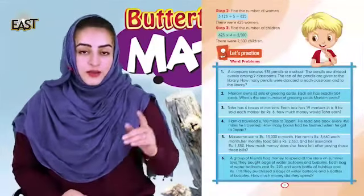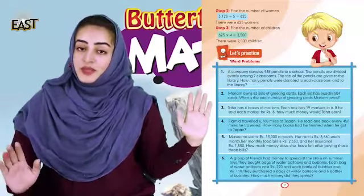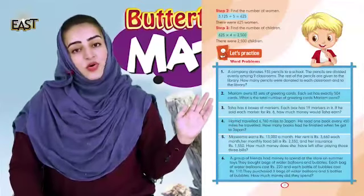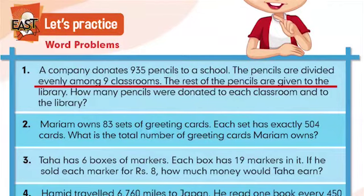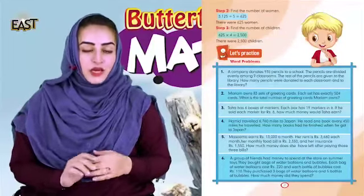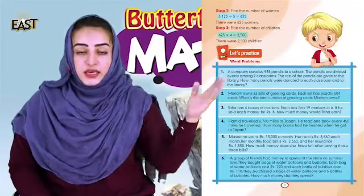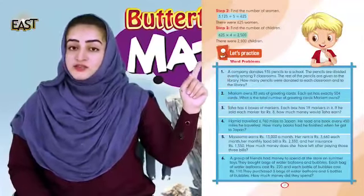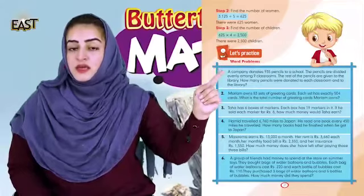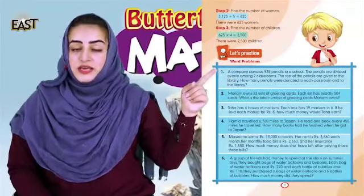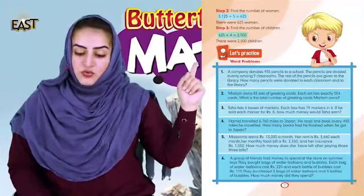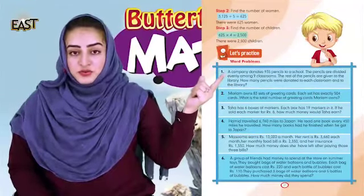So let's start — page 21, question 1. Let's read together; I will help you with all the questions, so don't worry. A company donates 935 pencils to a school. The pencils are divided evenly among 9 classrooms. What do you understand? It's written that a company donated 935 pencils to a school, and that school distributed them evenly in 9 classrooms. The rest of the pencils are given to the library. That's the information.